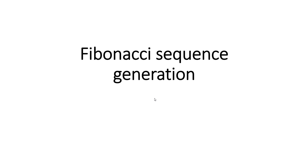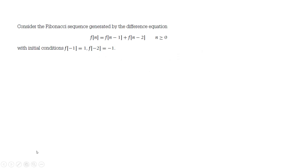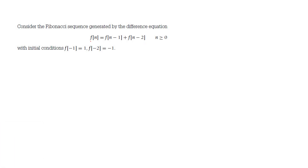Consider the Fibonacci sequence generator. The difference equation is given by f(n) = f(n-1) + f(n-2) for n greater than or equal to 0. This is the well-known Fibonacci equation from our basic programming course. The initial conditions are given as f(-1) = 1 and f(-2) = -1.